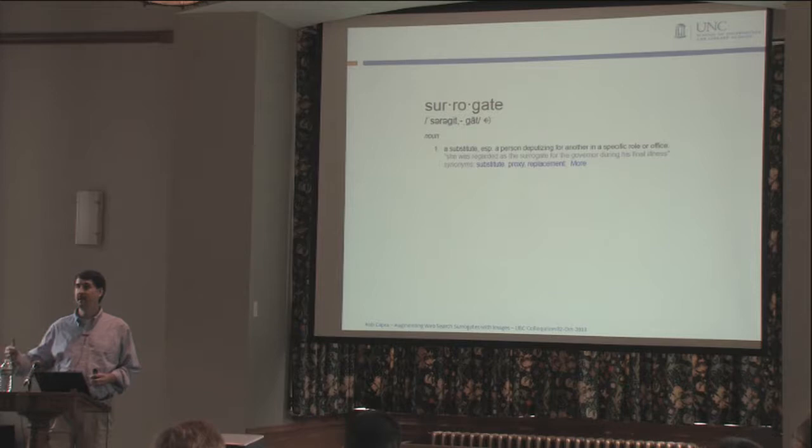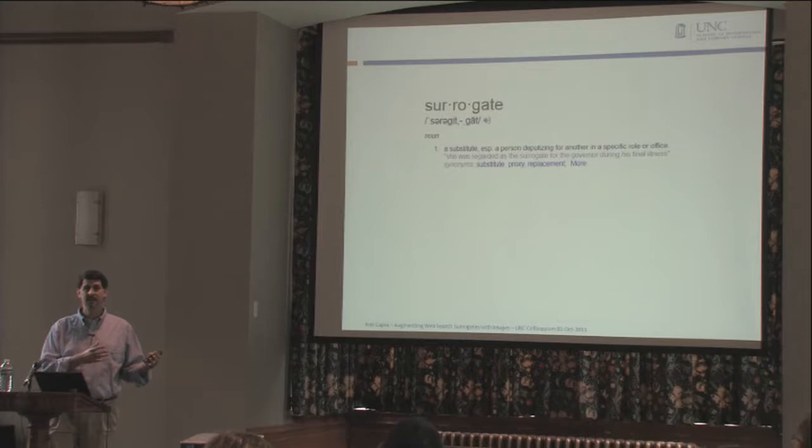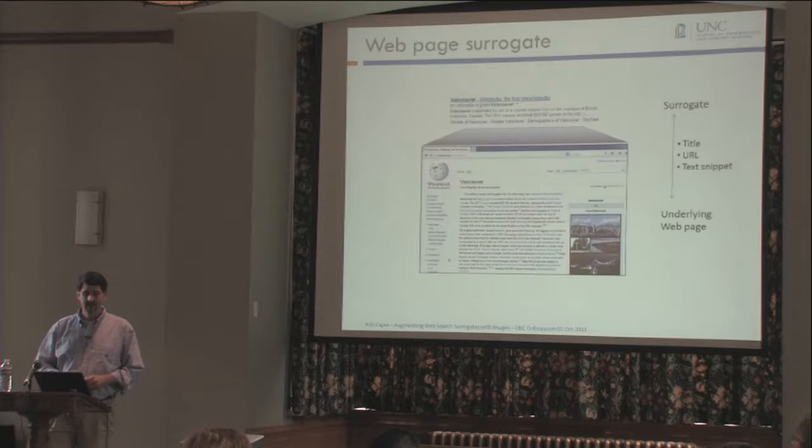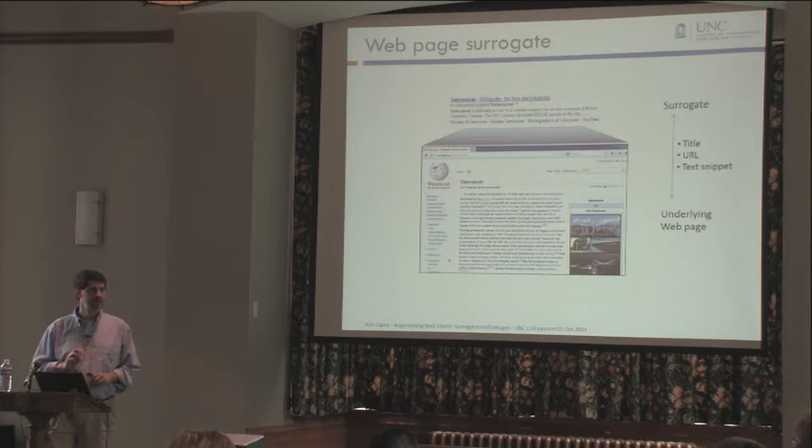What this is really doing is giving you hints about what you would find if you clicked on that result. If I clicked on this link, I'd go to the Wikipedia page, and this result on the SERP is trying to tell me what I would find there. In that way, we can think of this as a surrogate for the underlying page — a proxy that stands in because we can't show you the entire page, but gives some idea of what's there.